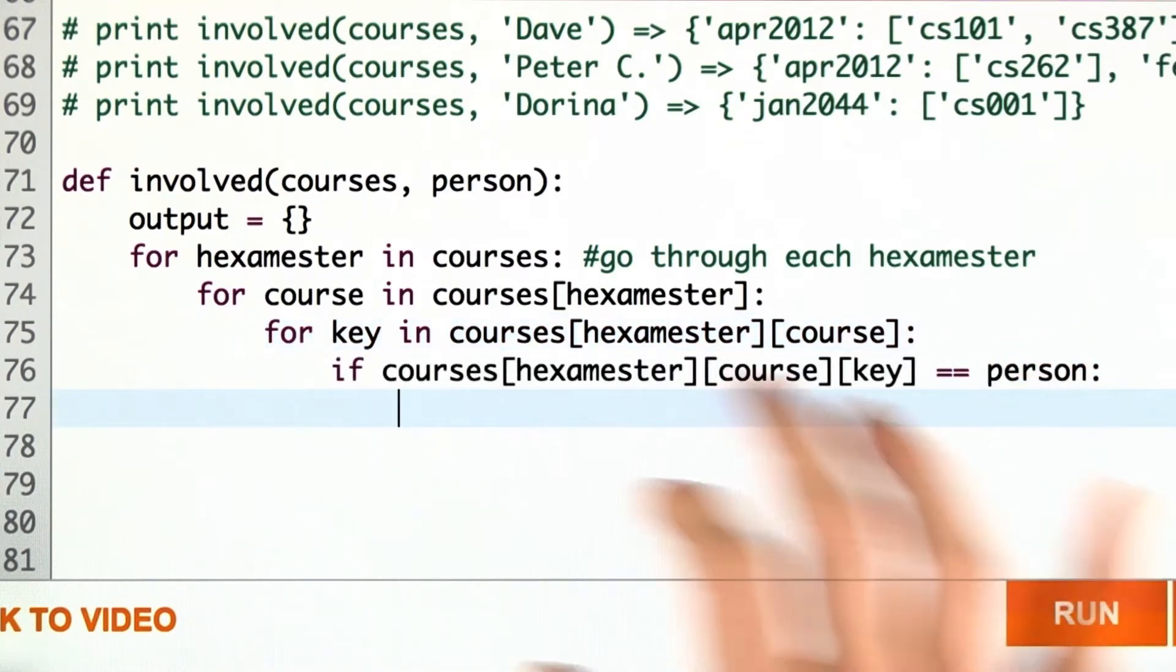If the value associated with all this is the person we're looking for, then we're going to update our output dictionary.